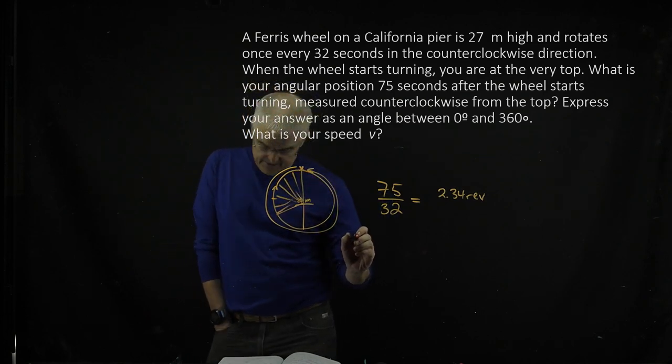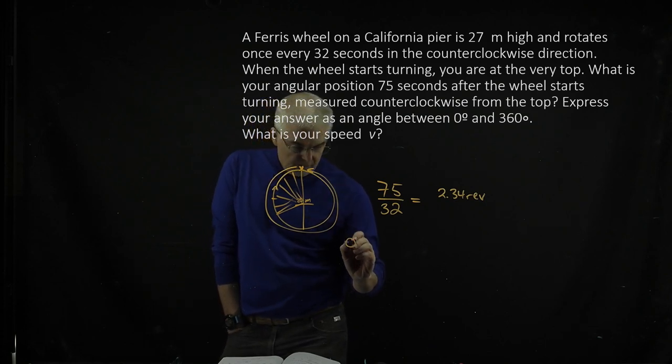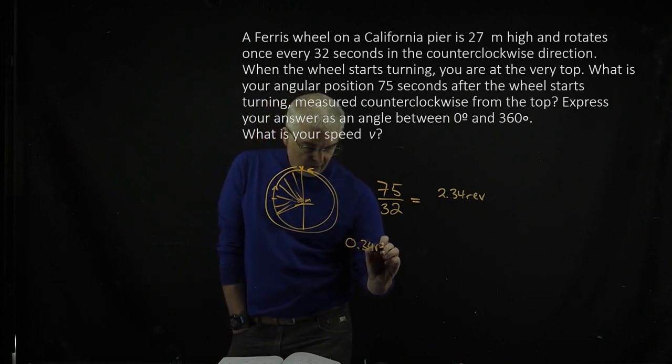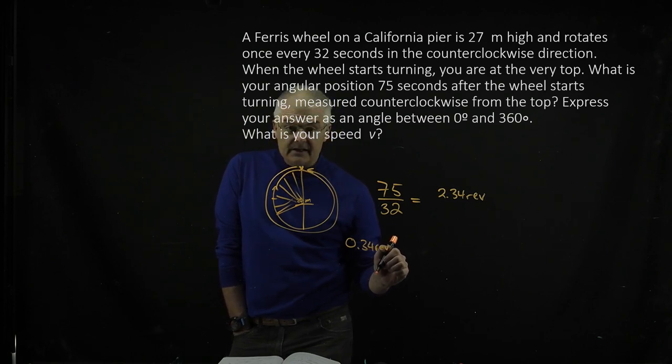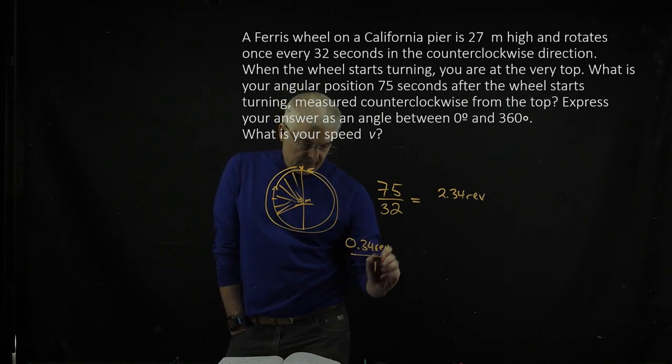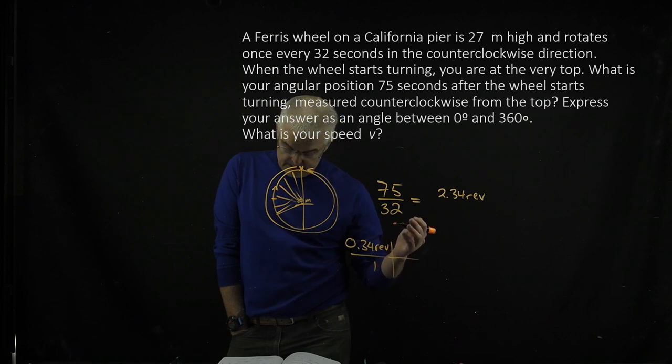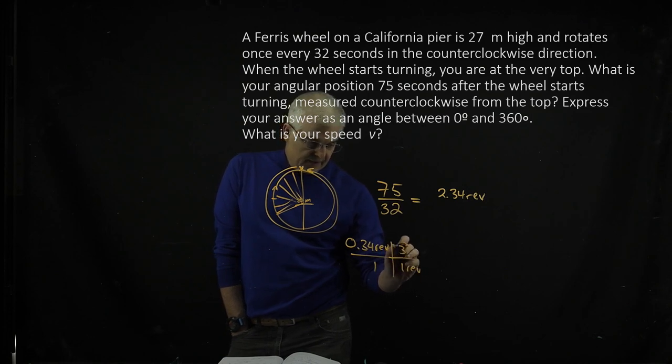So what I did is I then took 0.34 revolutions, and it's asking me to express your answer with degrees. So then what I did, as I said, that's revolutions, but in the world of degrees, I then said one revolution is 360 degrees. So you just multiply these two, and you get your angle.